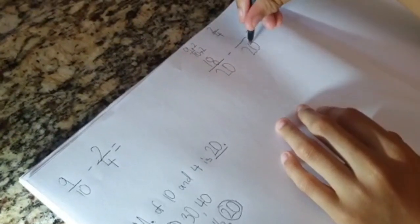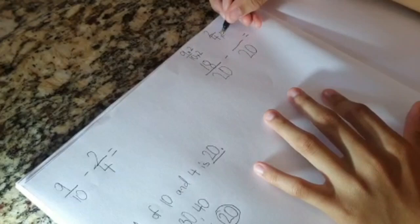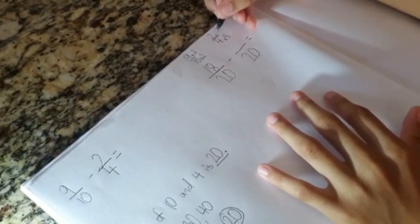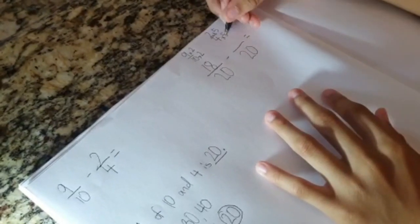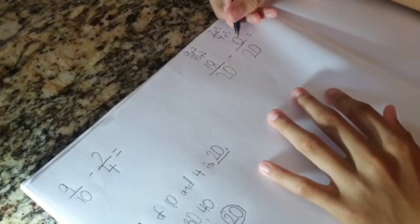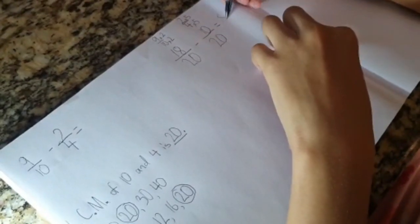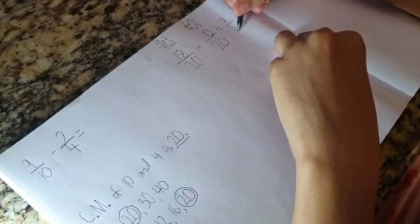And 4, what will give you 20? It's 5. So, 4 fives and 2 fives. 4 fives are 20. 2 fives are 10. 18 over 20 minus 10 over 20 is 8 over 20.